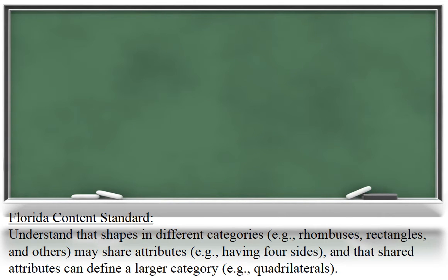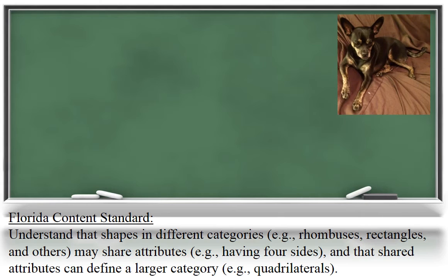One challenge your child may face is noticing that shapes may fit into more than one category, and therefore have more than one name. Let's compare this idea to a picture. The first name that comes to mind is probably dog. Not only could this animal be called a dog, but it also falls into the category of Chihuahua, Mammal, or even Louie. Thus, this animal could have more than one name. Although he probably will not respond if you call him Mammal.